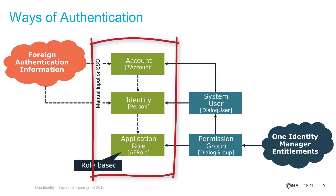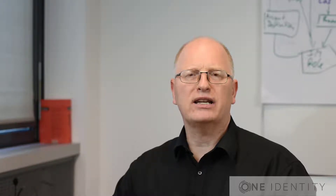The green objects in the middle are the business objects. We can assign system users to business objects, or alternatively permission groups. Permission groups, as mentioned, can be assigned to application roles. System users can be assigned to people — that means identities, which we call person objects in identity manager — or they can also be assigned to accounts in a very specific way. All of these different paths are described in the following details, and we will talk about the different ways to get through the authentication module in identity manager.